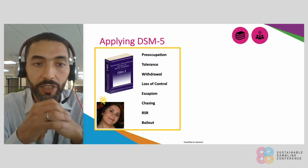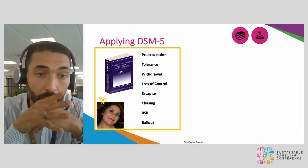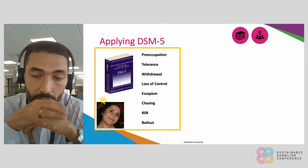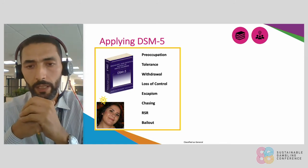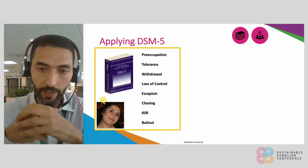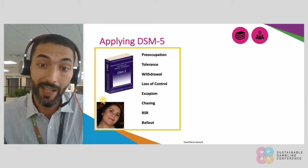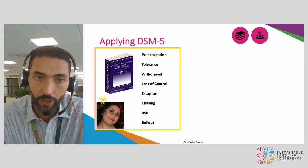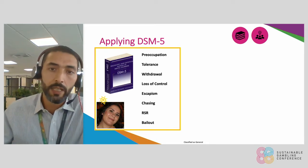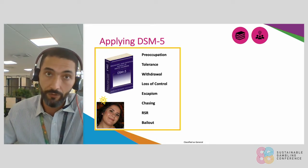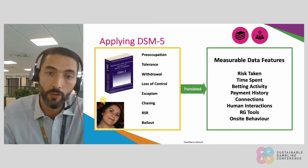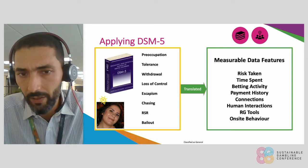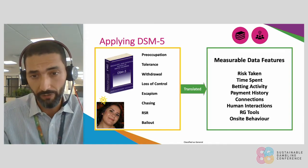It all started with Marius Bonello, who had the brilliant idea of applying DSM-5. DSM-5 is a globally used list of checkboxes for each mental disease, and there is one for addiction. This is based on nine criteria: preoccupation, tolerance, and so on, all listed on the left. The aim of the first exercise was to find how we can apply that to our actual data points within our database, looking at risk taken, time spent, betting activity, and so on — a lot of various dimensions.